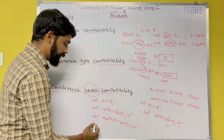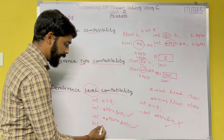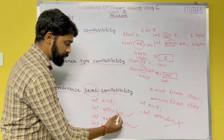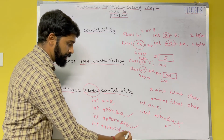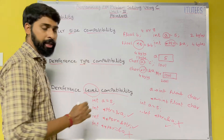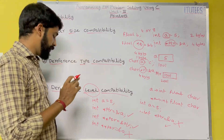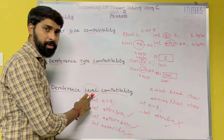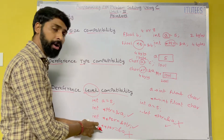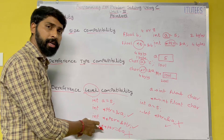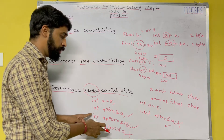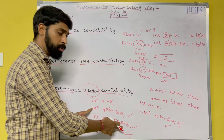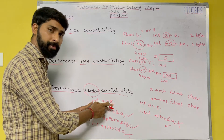But if I write int**** pqr equals to ampersand a, that is illegal. That is called dereference level compatibility. The pointer-to-pointer can store only the address of a pointer; a pointer can store only the address of a variable. If I create a pointer-to-pointer-to-pointer-to-pointer, then it can store the address of a pointer-to-pointer only.